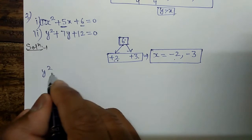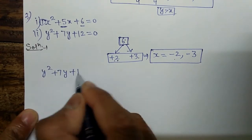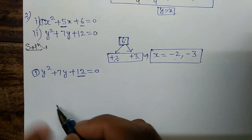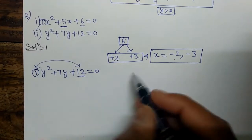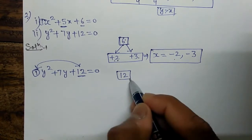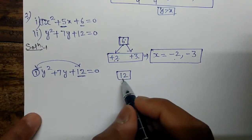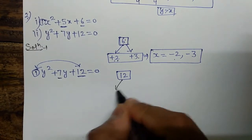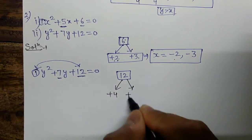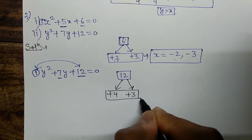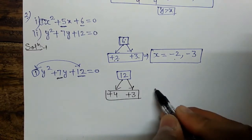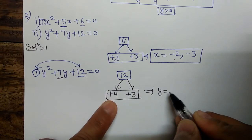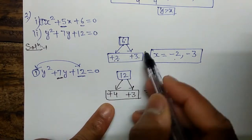The next equation is y² + 7y + 12 = 0. The coefficient of y² is 1 and the constant is 12. 1 × 12 = 12. We factor 12 such that adding gives 7 — the factors are 4 and 3. Always take the opposite sign of the factors.